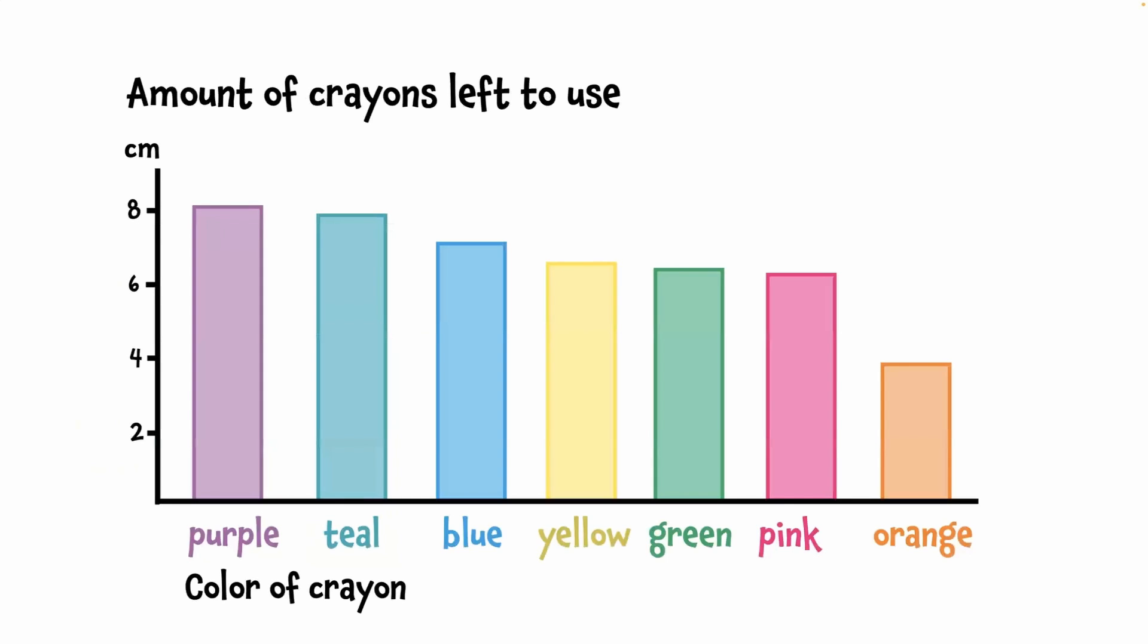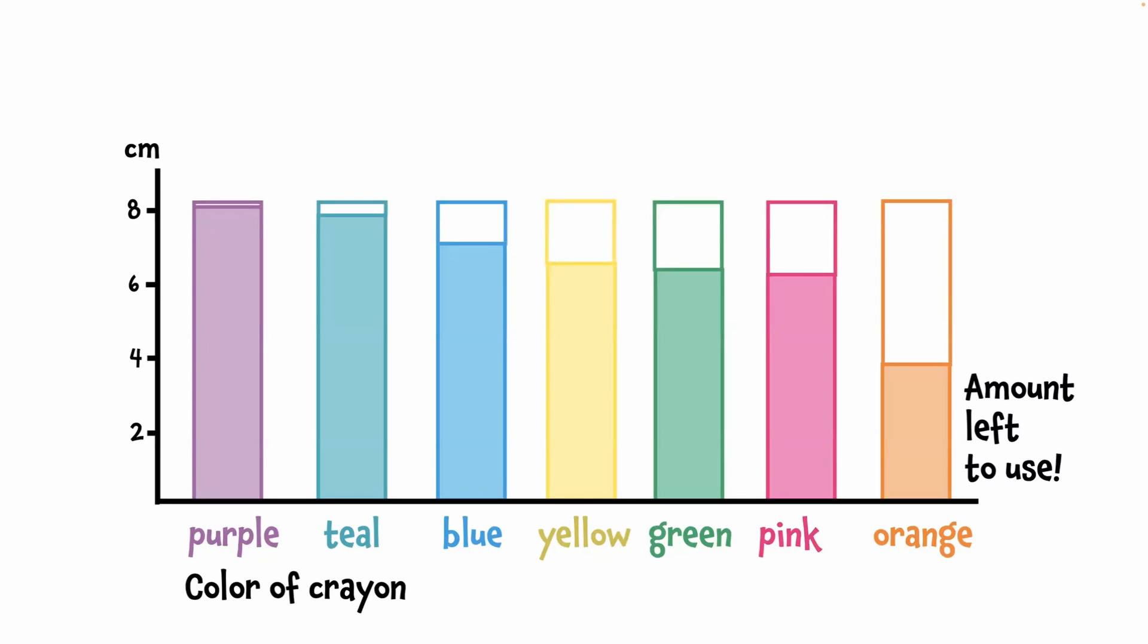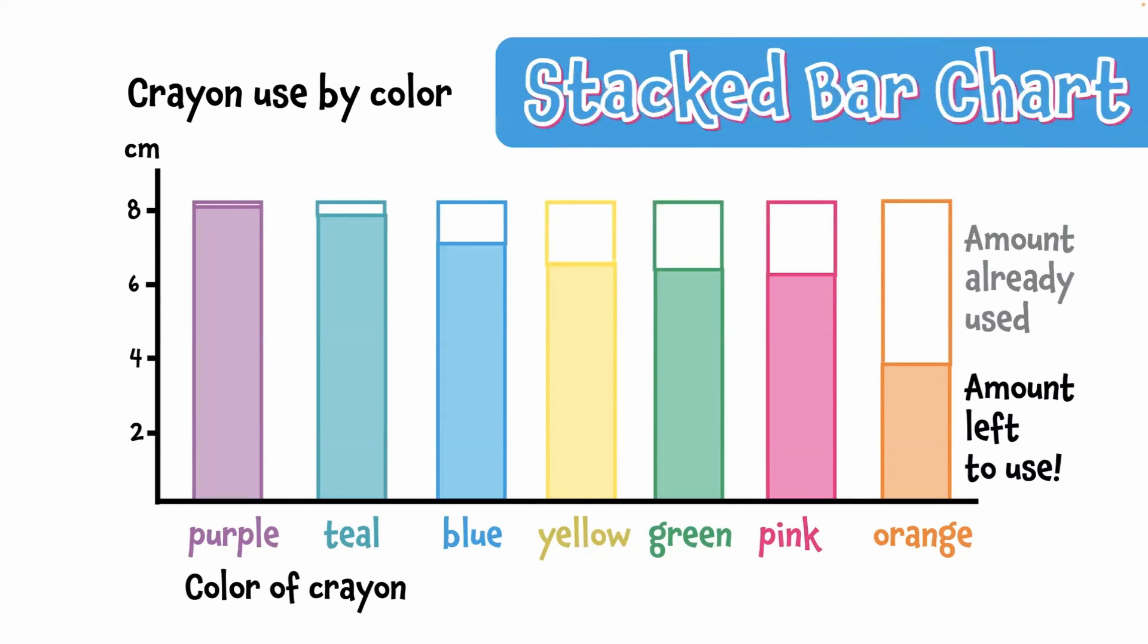Let's flip back to that basic bar chart and look at one more variation. This graph shows the amount of crayons left to use. I'll move that title so it describes the bars that are currently there. I'll add an outline that shows the amount of crayon already used and label that, too. I'll add a title that describes the graph, Crayon Use by Color. This graph shows our progress through each crayon. It's called a stacked bar chart.